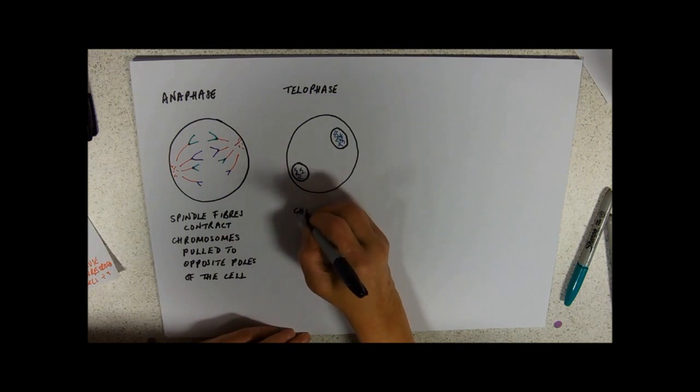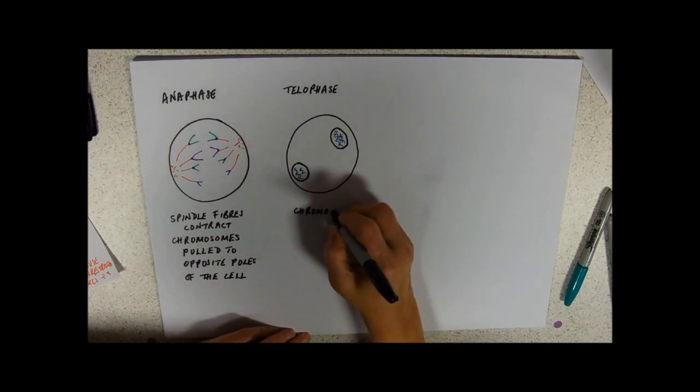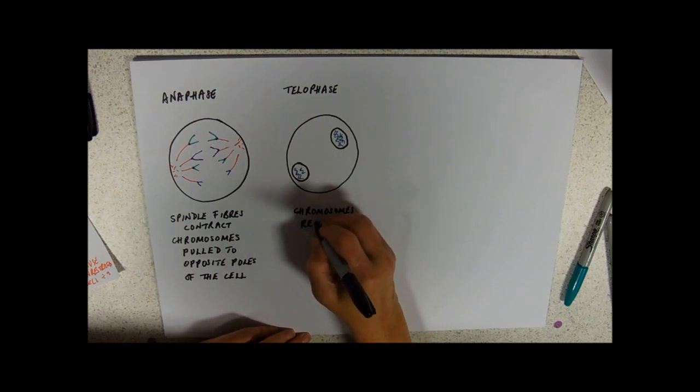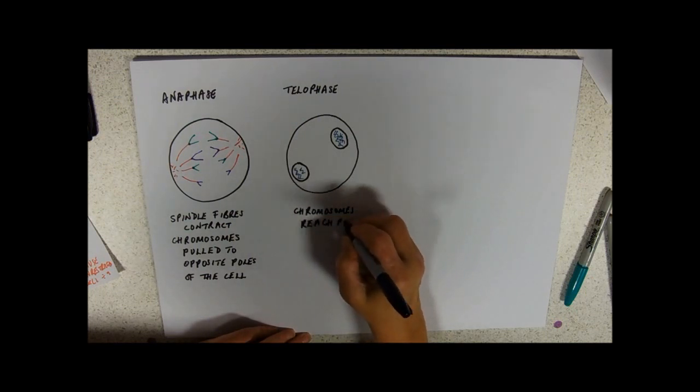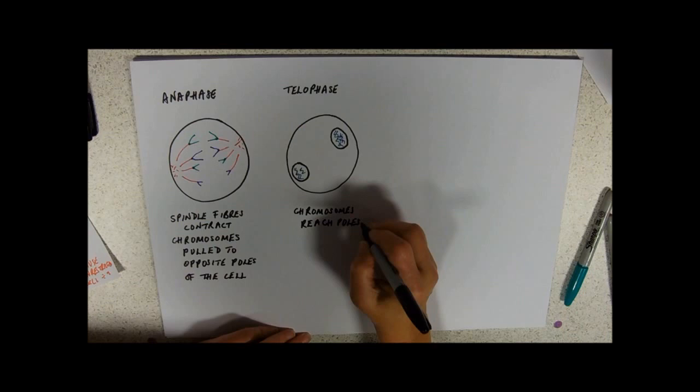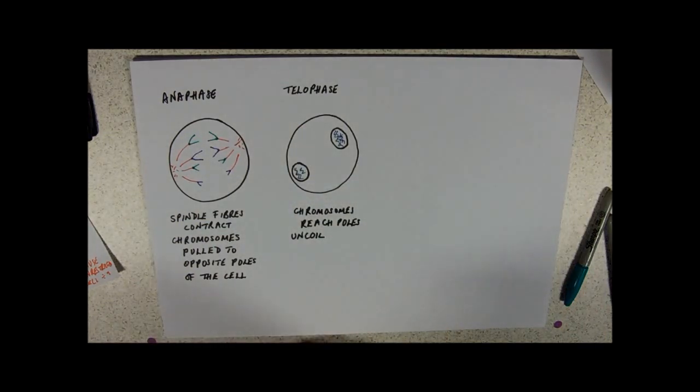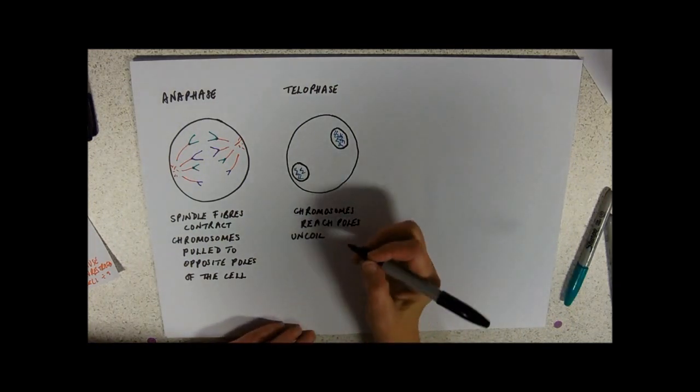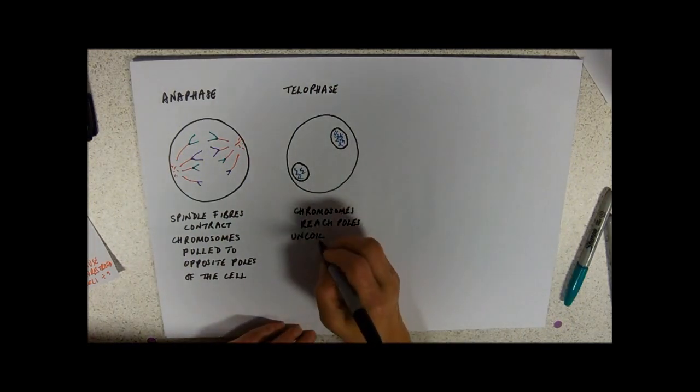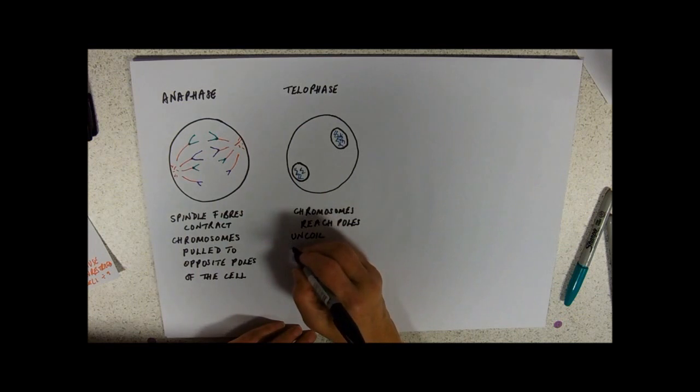So chromosomes reach the poles. They uncoil. So they condensed up in the prophase. They're now going to uncoil and become invisible. And we're going to get the nuclear membrane reforming.